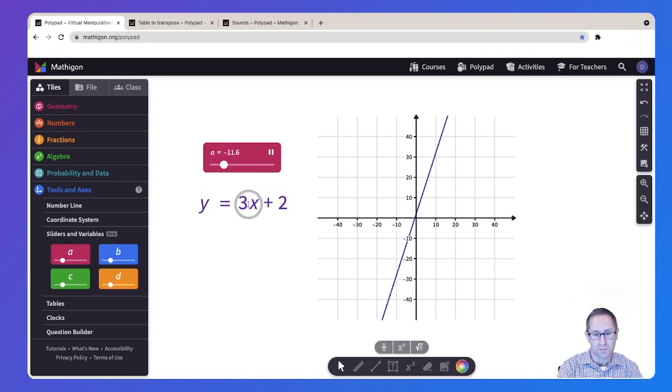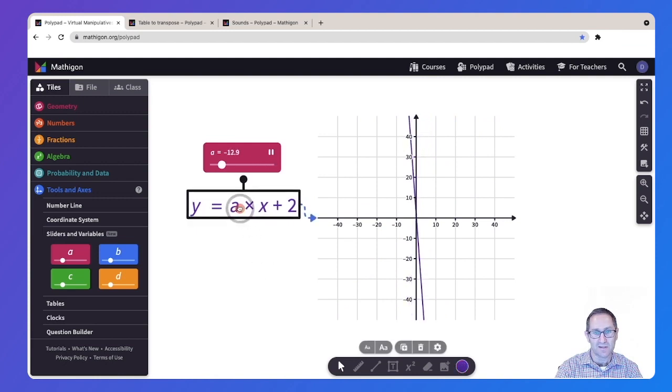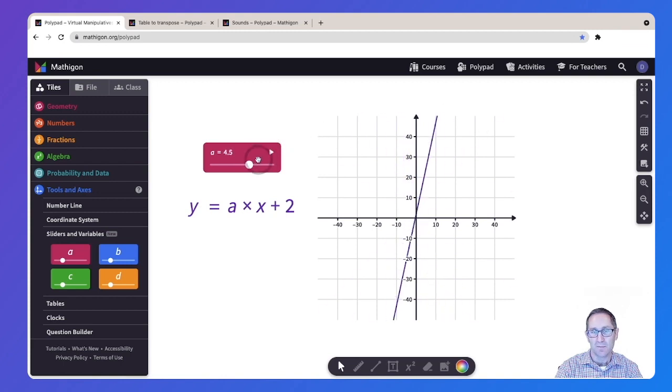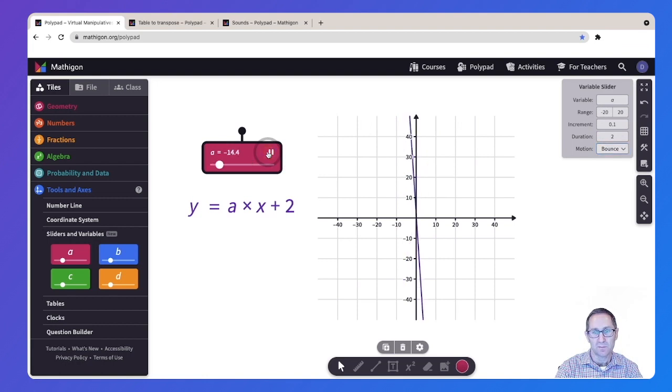So instead of doing 3x plus 2, I'm going to do A times x plus 2. And now you can see that the line is changing as the value of A is changing. I could pause it. And maybe I want this to do a bounce instead of a loop. I'll hit play and there we go. And it's changing as the variable of A is changing. Let me pause it here.